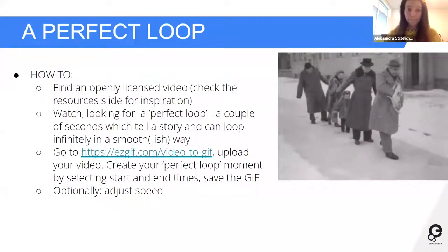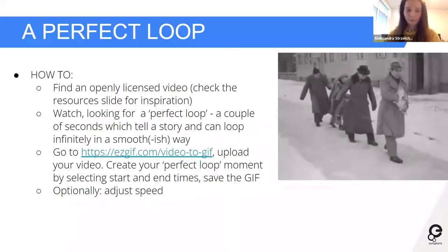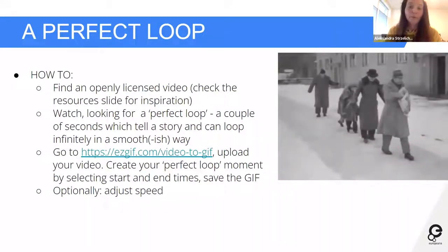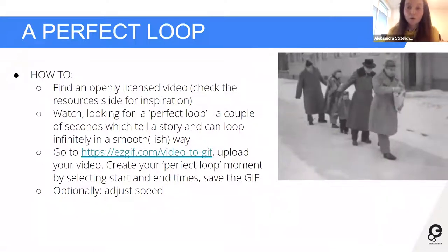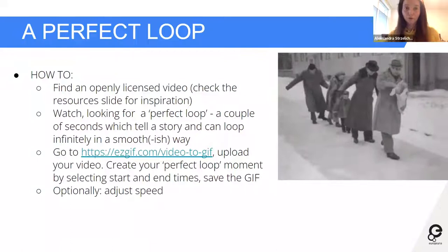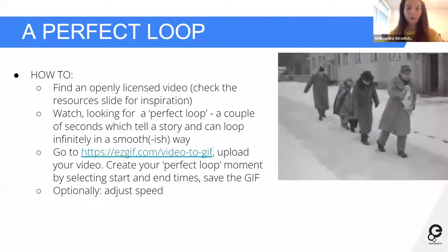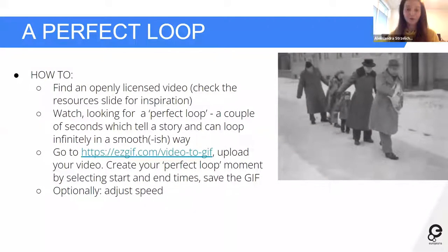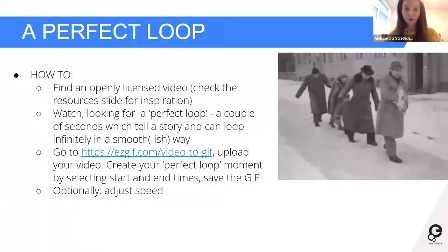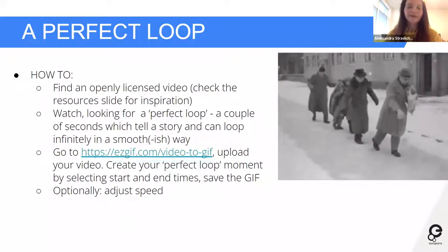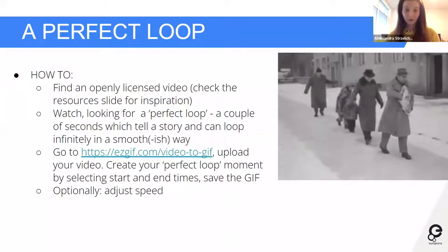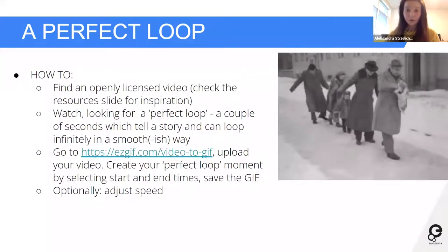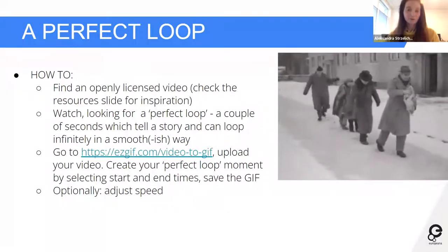To make a perfect loop, find an openly licensed video — and here is the tricky part. A lot of video material will be under some kind of copyright because it's new. On Europeana you can always see the license of each item, so you can be sure the ones we're linking are okay. In general, if you find a video on the internet, beware because it will probably be in copyright. Watch and find the essential moment that tells a story in a few seconds, and try to make a smooth animation.